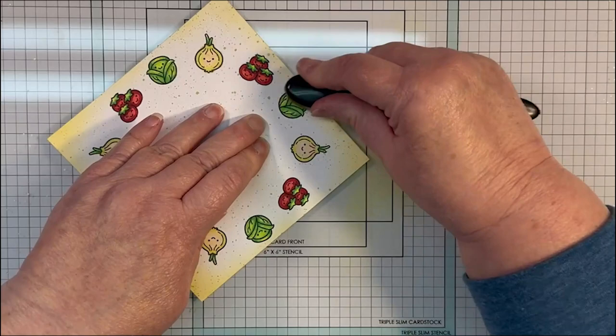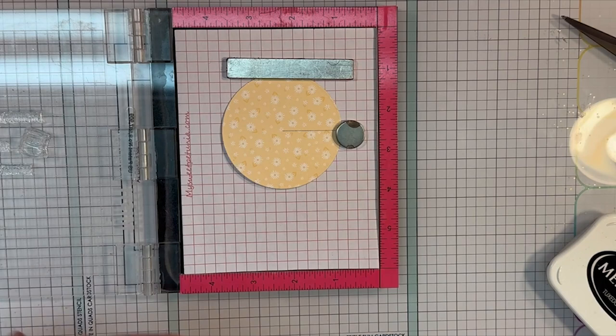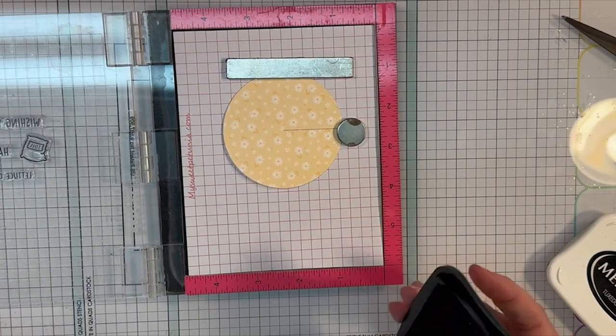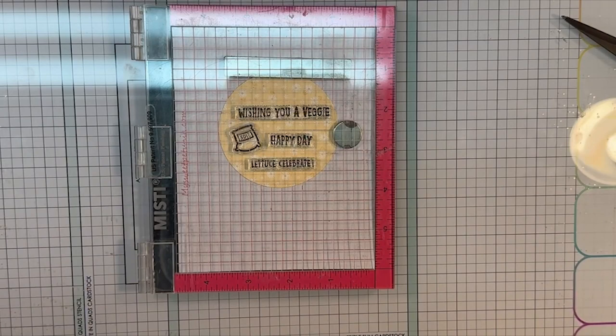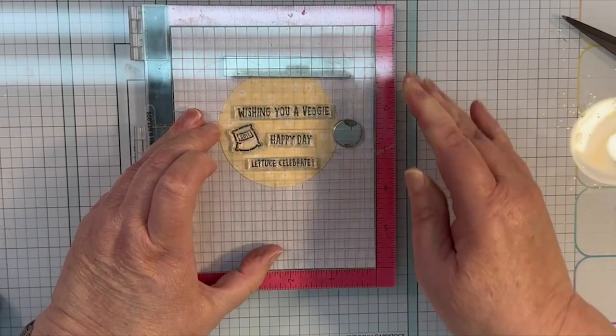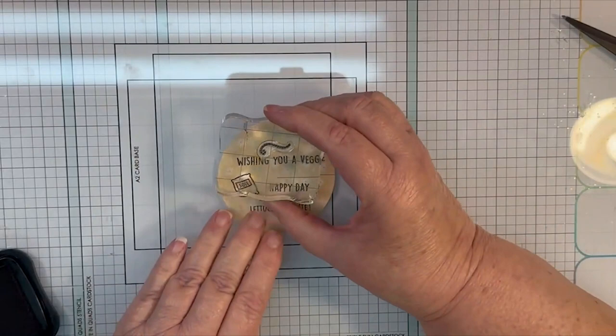I'm going to start on the interactive part of my card. This is the Give It a Whirl die. I'm going to use the front piece, which is the piece that does the spinning. I'll put that in my MISTI and stamp my sentiment on that along with a little piece from the Very Veggie Happy stamp set. I try to avoid the center cut when I'm stamping just to make things easier when it spins.